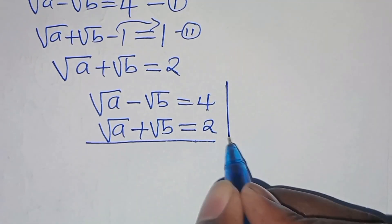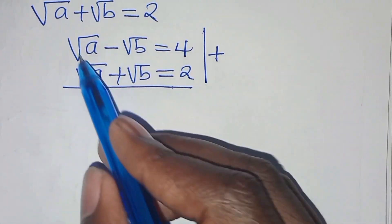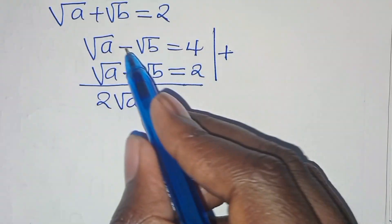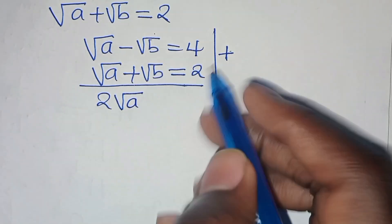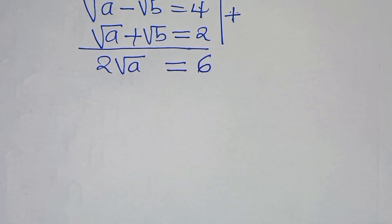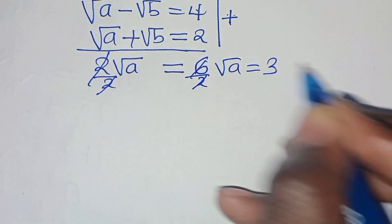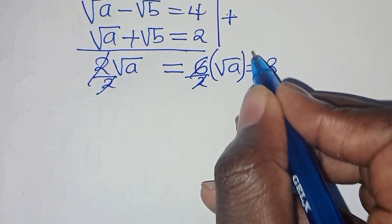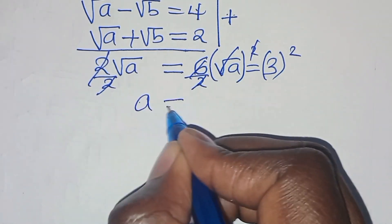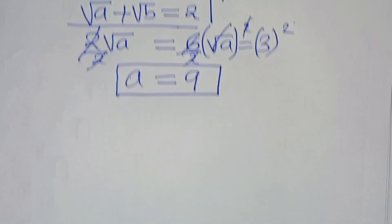Adding the two equations: 2√a = 6, so √a = 3, meaning a = 9. To solve for b, substituting back into √a − √b = 4: since √9 = 3, we get 3 − √b = 4, so −√b = 1.